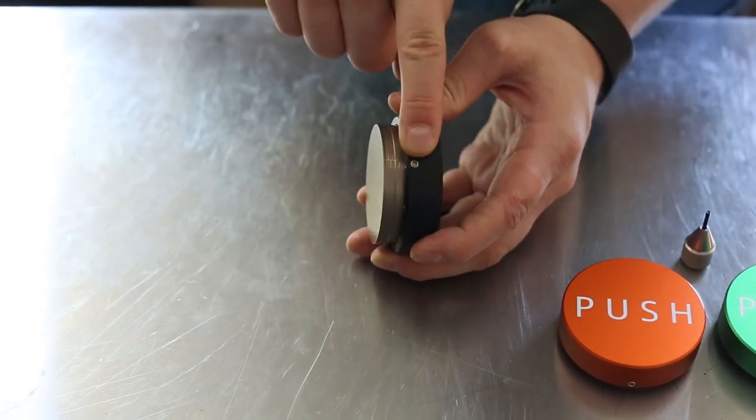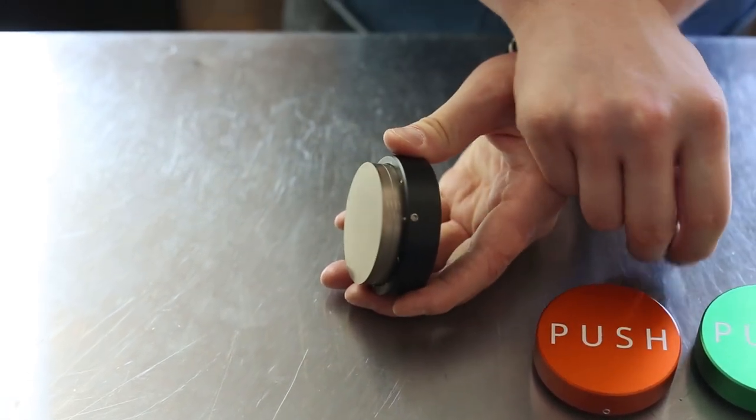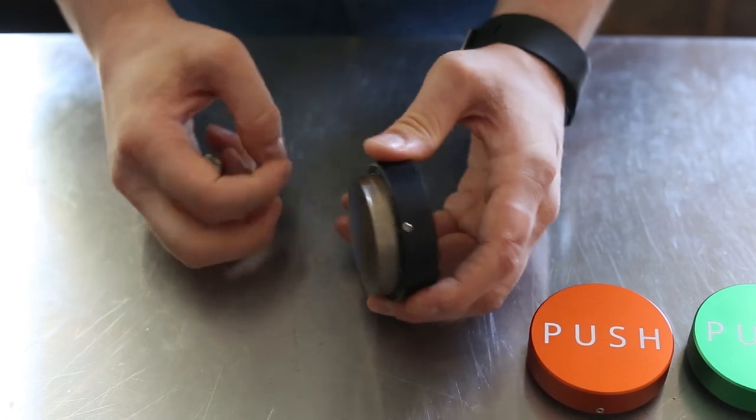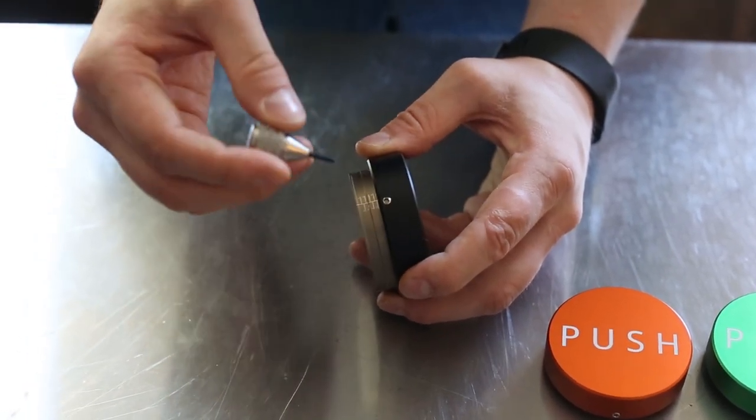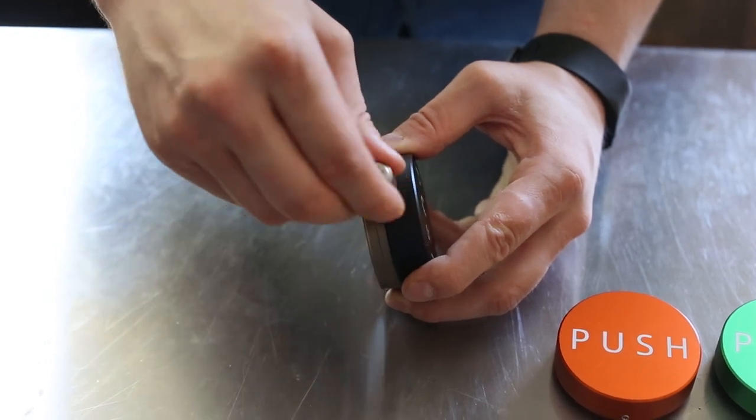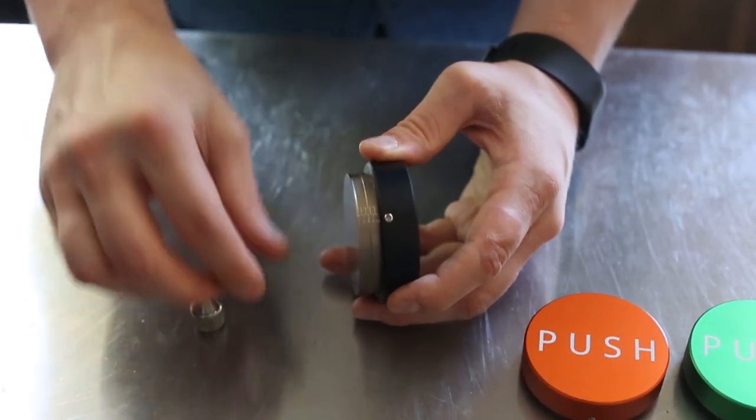There's a grub or set screw here that locks the piston in place at your desired depth. You need to use a hex wrench, which is included, to unlock it in order to adjust your depth.